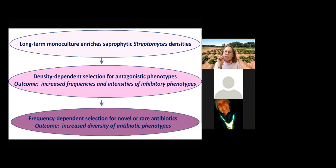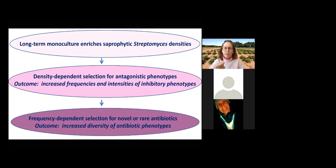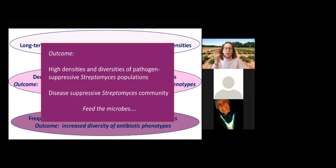The next critical step is frequency-dependent selection. If everyone is competing for resources and all producing the same antibiotic, there's no advantage — you're resistant to your own antibiotic. In this high-density, highly antagonistic community, rare and novel antibiotics will have a much greater fitness benefit. If you're clever enough to evolve or obtain through horizontal gene transfer a new rare antibiotic, it'll selectively increase the diversity of antibiotics. These three ecological steps — resource enrichment, density-dependent antibiotic selection, and frequency-dependent diversification — are key to producing that high-density and diversity of antagonistic Streptomyces that hallmark this disease-suppressive community.